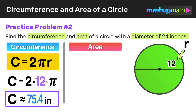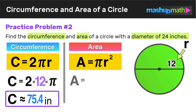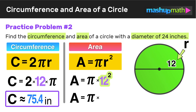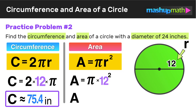Now let's find the area. The area formula is a equals pi r squared. So a equals pi times 12 squared. Since 12 squared equals 144, the area equals pi times 144. We can express this in terms of pi as 144 pi. Or for an exact answer, multiply 144 times pi, which is approximately 452 inches squared.